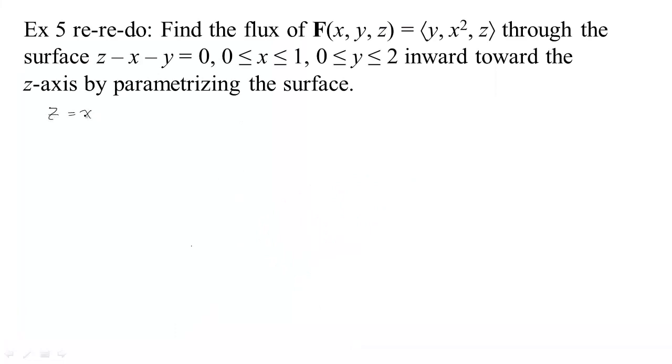So z equals x plus y, just rearranging this. Since z is a function of x and y, I can get an easy parametrization in terms of just x and y. X can play itself, y can play itself, and z can be x plus y. So there's my parametrization. The bounds on x are x goes from 0 to 1 and y goes from 0 to 2, and that creates my surface.